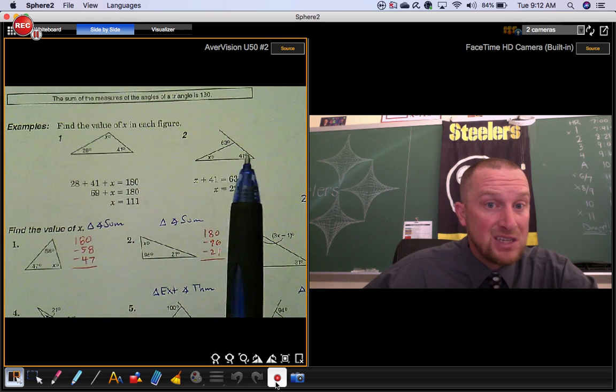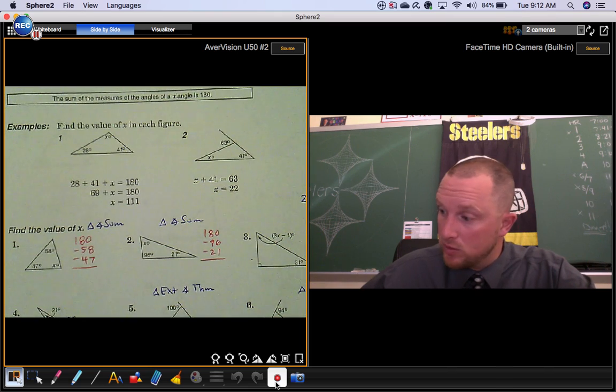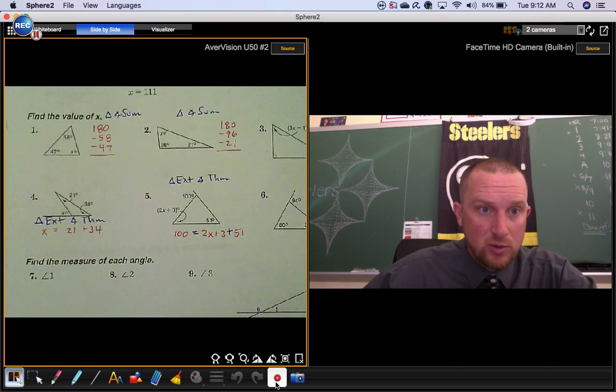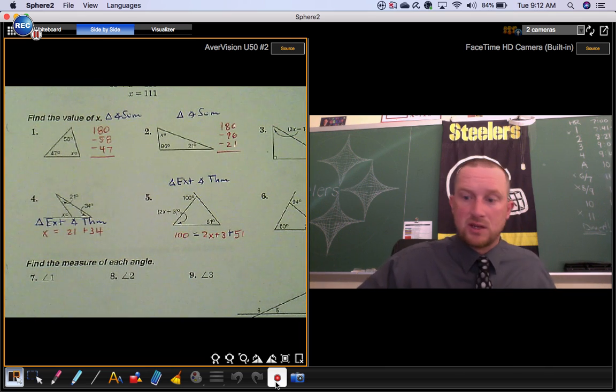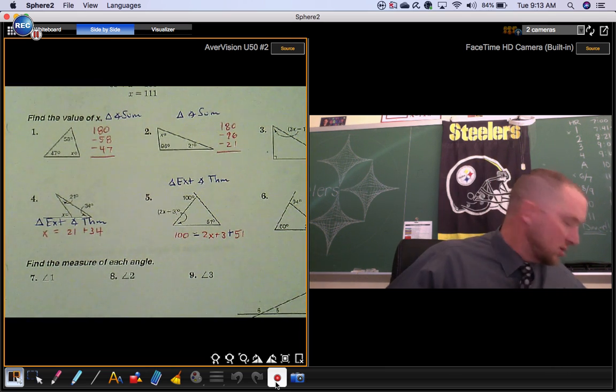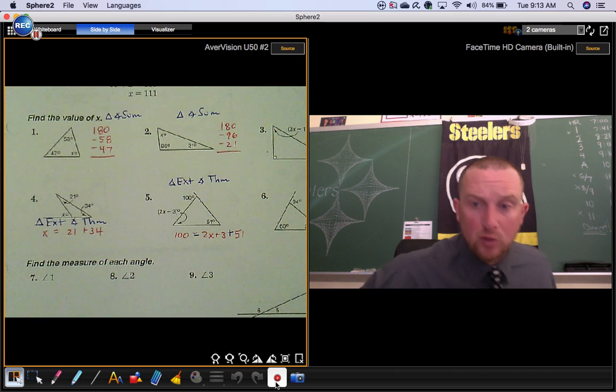You can use that to help you on these exercises. In number one, they give you the measure of two of the angles in the triangle, and you need to find the missing measure.